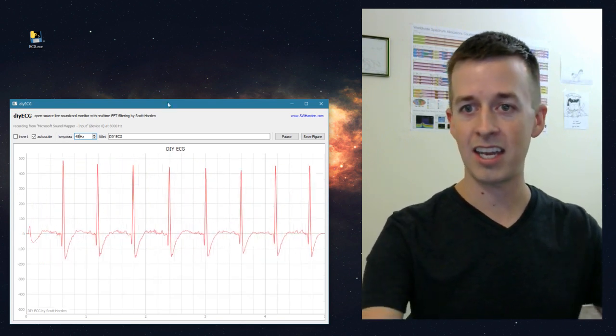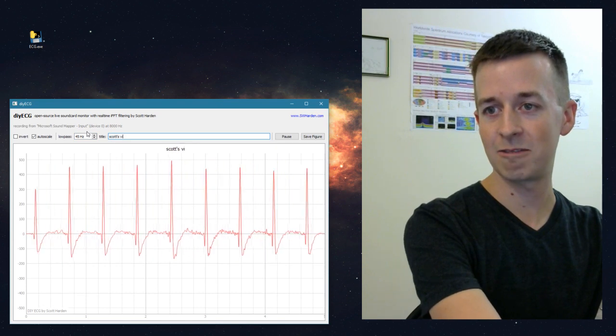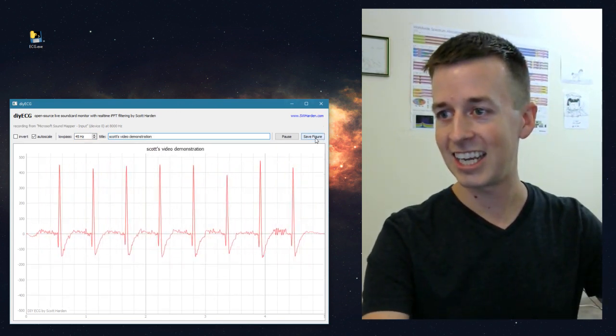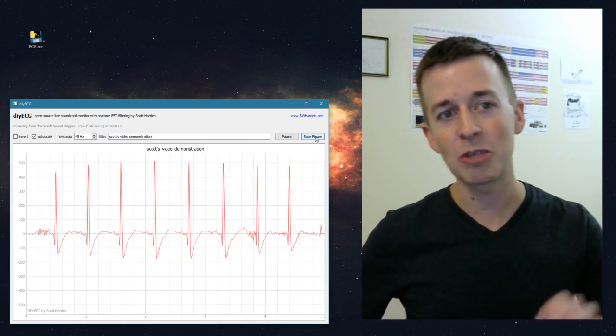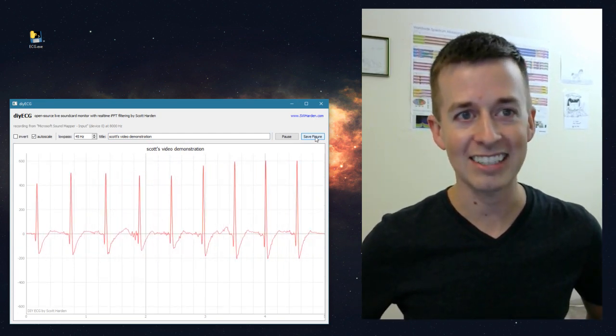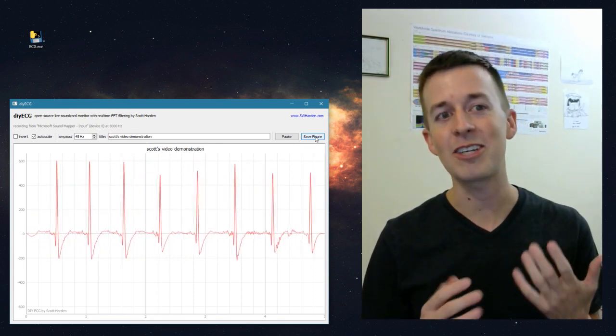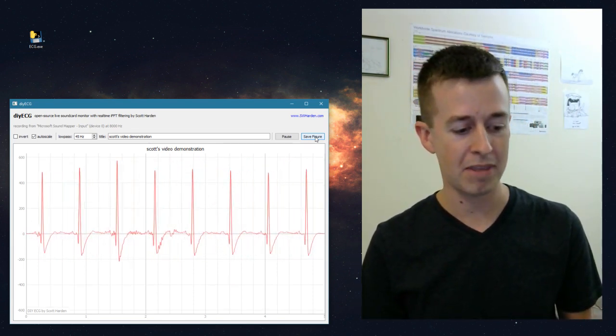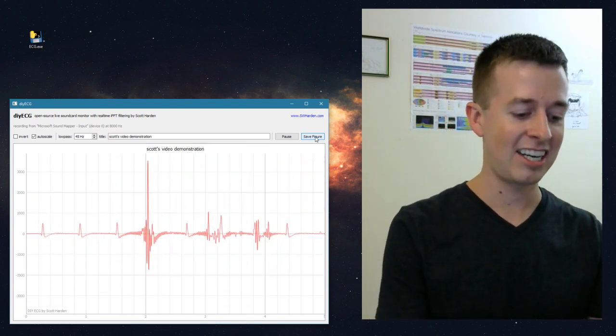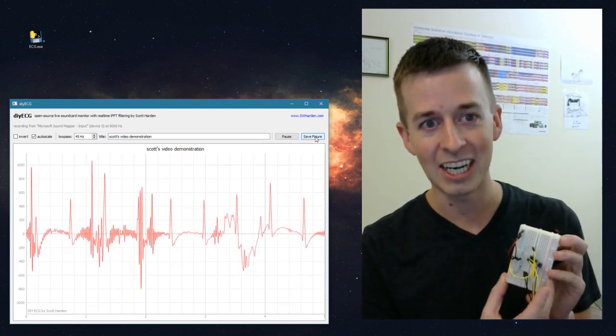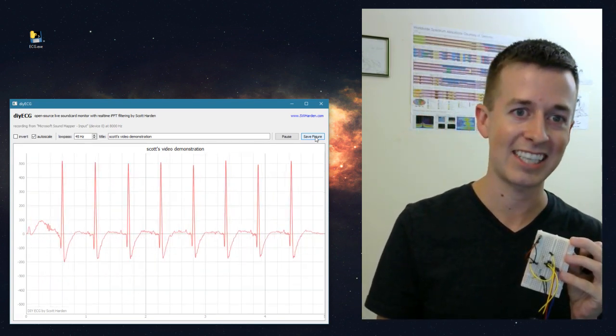So I'm going to go ahead and take a picture here. So I'll call it Scott's Video Demonstration, and save figure, and I can stick that up on my website. I'll talk in a little bit more detail in a few minutes about exactly how this works, but I thought this was pretty cool. So, again, there's nothing new about an electrocardiogram, and it's even a do-it-yourself electrocardiogram. The thing that I think is so interesting about this project is how simple of a circuit we can build to produce such fantastic output.